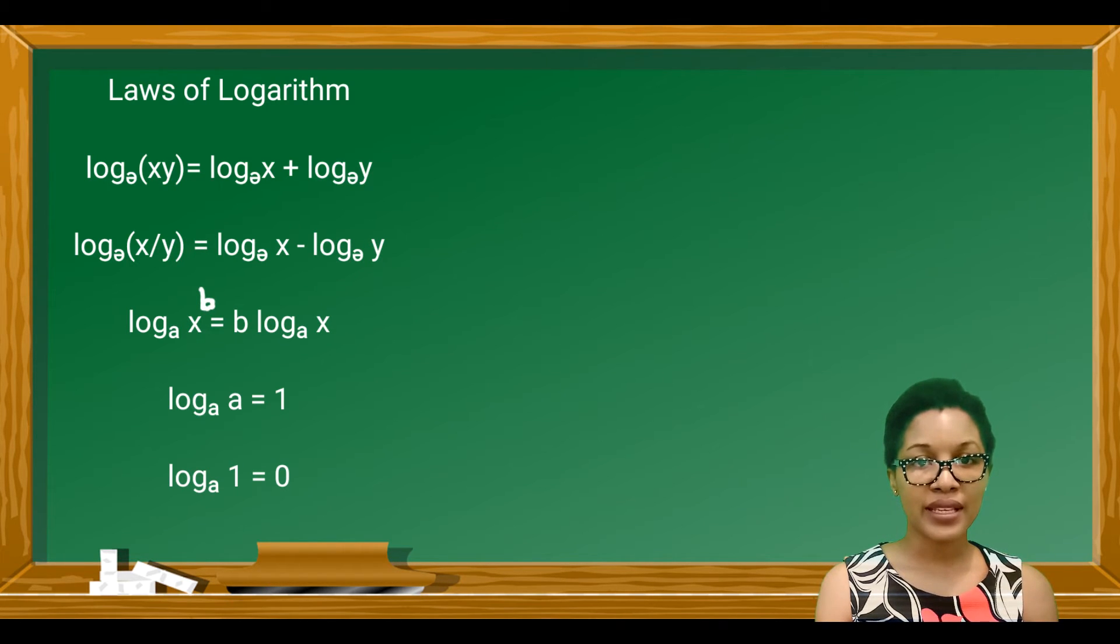Log base a of a is equal to 1, and log base a of 1 is equal to 0. Remember, a is a variable and it could be represented by any number. Now, once the bases are the same, you can use these rules.